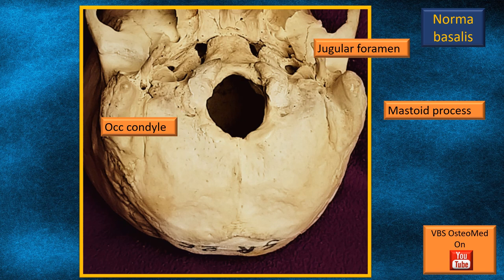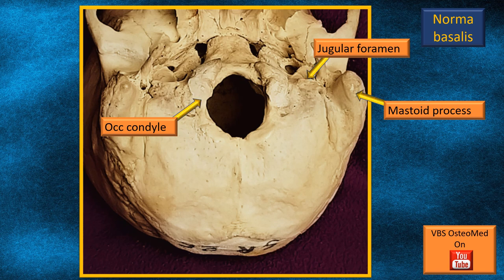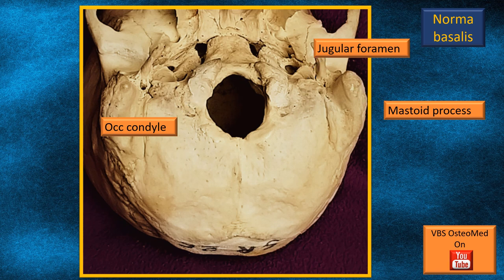The foramen is not very clearly visible in this view, but in another photograph where the skull is more tilted it gives a better view. The large foramen seen in front of the jugular is the inferior opening of the carotid canal.